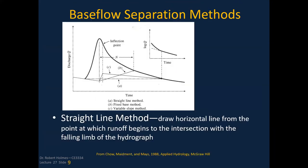The straight line method simply draws a horizontal line from the point where runoff begins to the intersection with the falling limb of the hydrograph. You take the point where runoff begins, draw this horizontal line, and in many cases you'll be approximately at the location of the discontinuity. It might not be exact but will be approximate. You can plot log-Q versus time to verify, or draw the straight line and compare, making a judgment call. That's the straight line method.